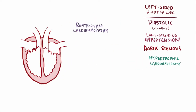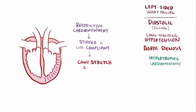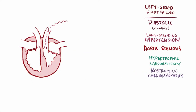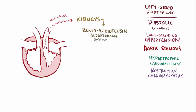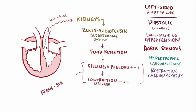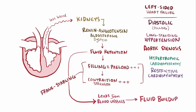Restrictive cardiomyopathies are yet another cause. In this case, the heart muscle gets stiffer and less compliant, and therefore the left ventricle can't easily stretch out and fill with as much blood, which leads to diastolic heart failure. When the heart doesn't pump out as much blood, there's decreased blood flow to the kidneys, which activates the renin-angiotensin-aldosterone system, ultimately causing fluid retention. This fills the heart more during diastole and increases preload, which increases contraction strength by the Frank-Starling mechanism. Unfortunately, in the long term, retaining fluid typically leads to a large portion leaking into the tissues and contributing to fluid buildup in the lungs and other parts of the body.